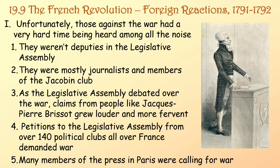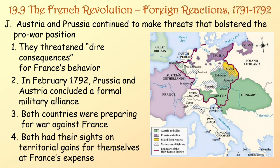Unfortunately, those against the war had a very hard time being heard among all the noise — they weren't deputies in the Legislative Assembly. As the Legislative Assembly debated the war, claims from people like Brissot grew louder and more fervent. Petitions from over 140 political clubs all over France demanded war. Many members of the press in Paris were calling for war. Austria and Prussia continued to make threats that bolstered the pro-war position. In February 1792, Prussia and Austria concluded a formal military alliance, and both countries were preparing for war against France, with their sights on territorial gains at France's expense.